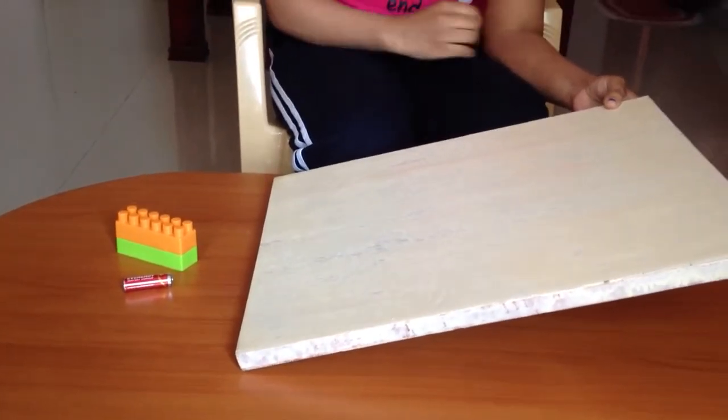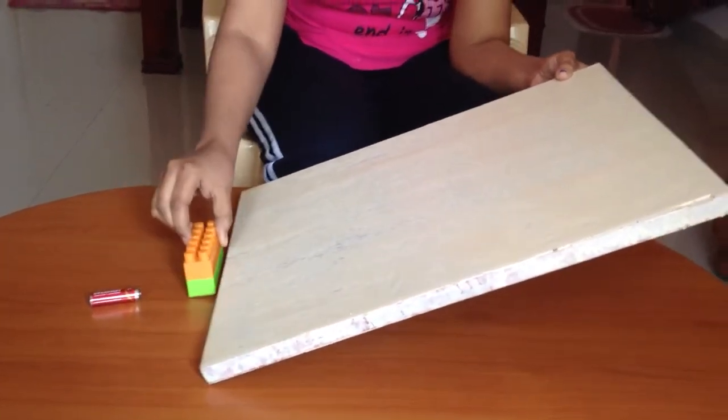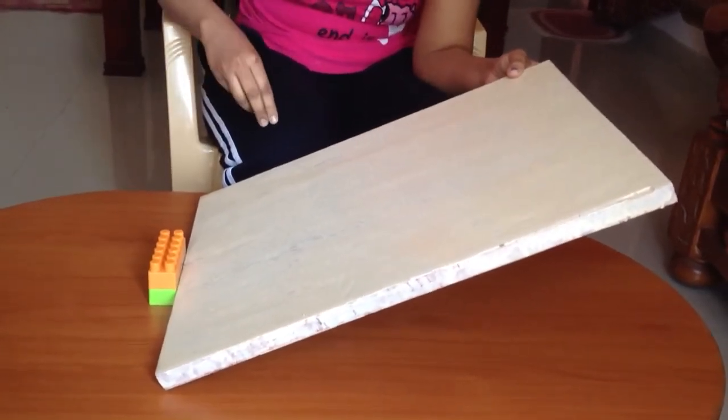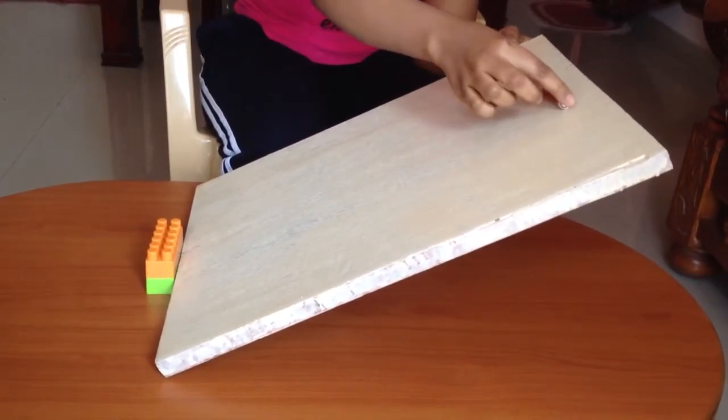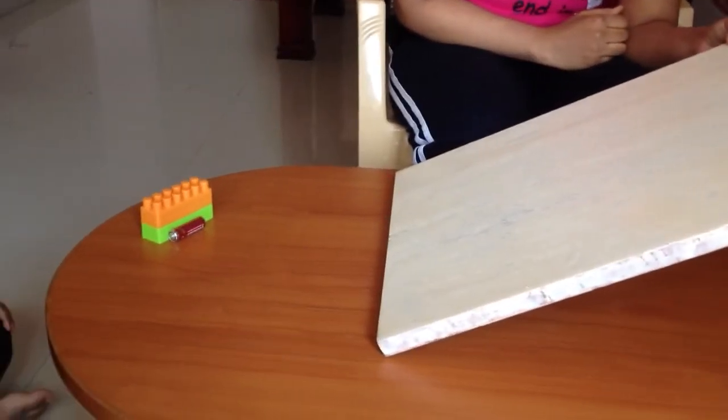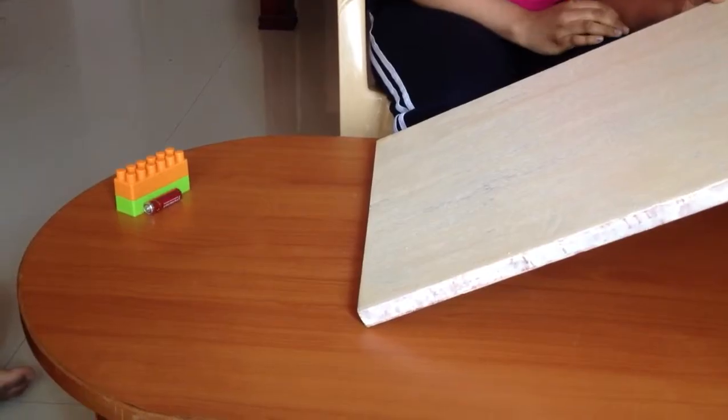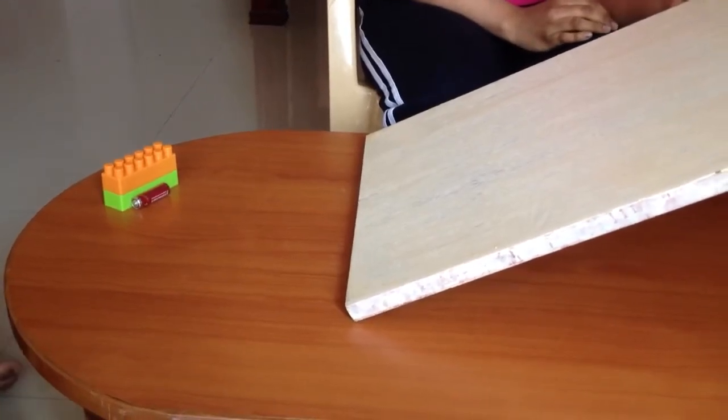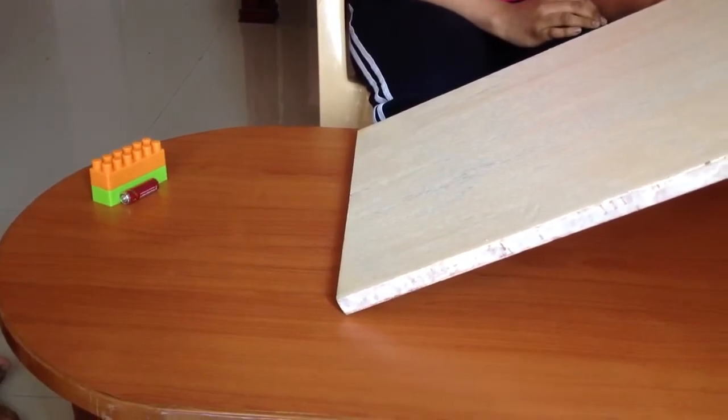Now further raise the inclination of the inclined plane to make it more steep. Let the cell roll down again and hit the block with more speed. We observe that this time the displacement of the block is more than the earlier case.